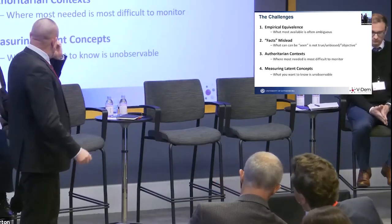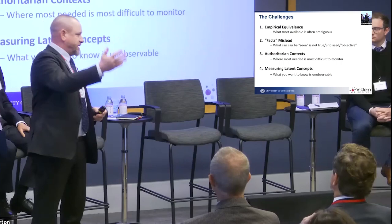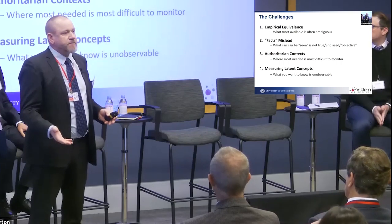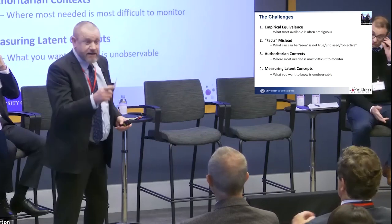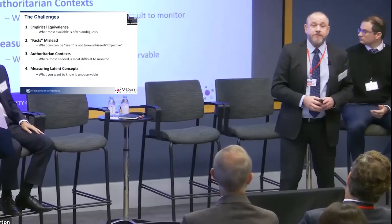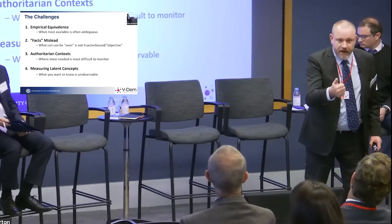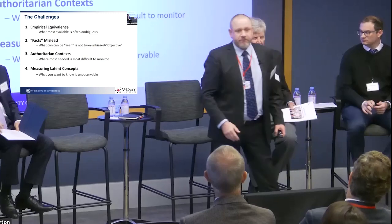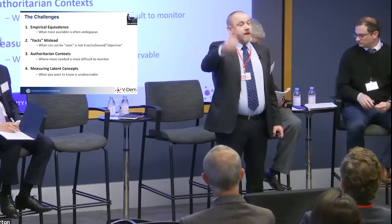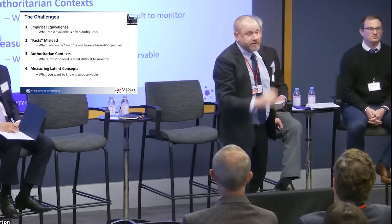Take something like media freedom. One thing we need is that journalists can write critically about the government without being harassed, thrown into jail, or killed — as Putin likes to do. We could count the number of journalists being harassed or killed each year; we could work with Reporters Without Borders. But what's the problem with that?